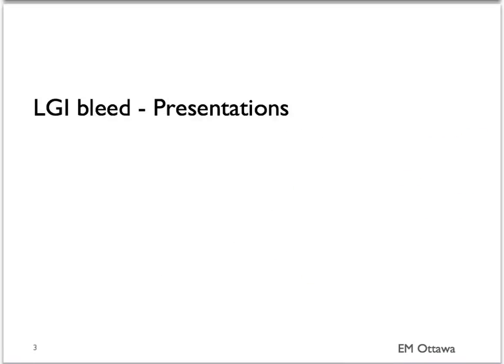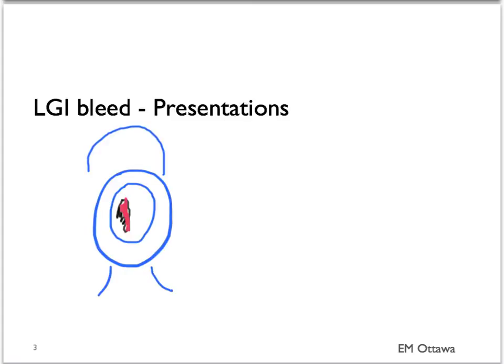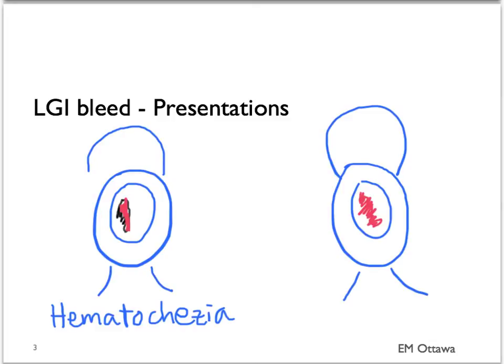In terms of presentation, lower GI bleed will present either as hematochezia, which is blood mixed in with stool, or it can present as bright red blood per rectum. It can either be on wiping or seen in the toilet bowl.